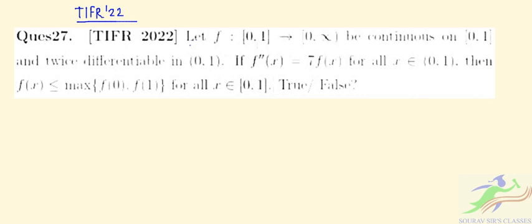Question number 27 says: let f: [0,1] → [0,∞) be continuous on [0,1] and twice differentiable in (0,1).